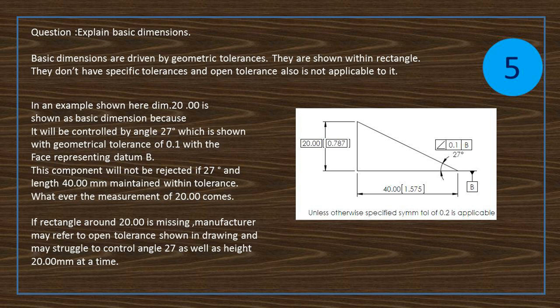In an example shown here, dimension 20 is shown as basic dimension because it will be controlled by angle 27 degrees, which is shown with geometrical tolerance of 0.1 with the face representing datum B. This component will not be rejected if 27 degrees and length 40 maintained within tolerance, whatever the measurement of 20 comes.